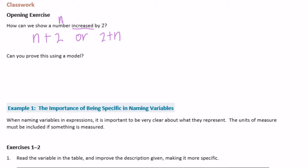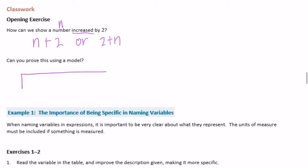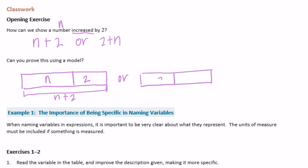Can you prove this using a model? We're going to draw a tape diagram. We'd have a box labeled n and a box labeled 2, so this would be n plus 2. Or we could flip it around the other way and have 2 plus n. It doesn't really matter how large you make each box because we don't know how large n is in comparison to 2.